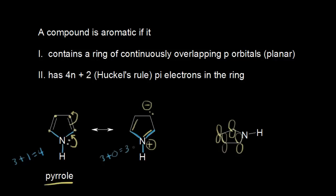So 3 plus 0 is 3, meaning that this nitrogen is now sp2 hybridized. Since that nitrogen is sp2 hybridized, it has a free p orbital, so we can go ahead and draw the p orbital on that nitrogen. In terms of the dot structure, these two electrons are actually delocalized and participate in resonance. So that lone pair of electrons, you could think about as occupying a p orbital here. They're actually delocalized, and we have all these pi electrons delocalized throughout our ring.